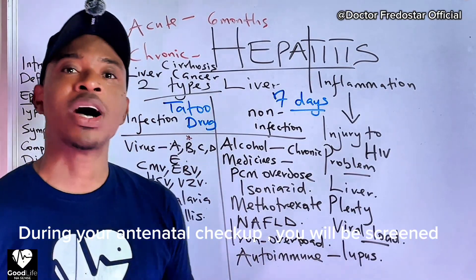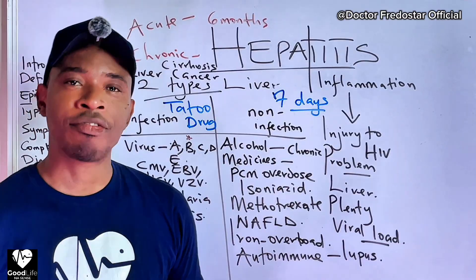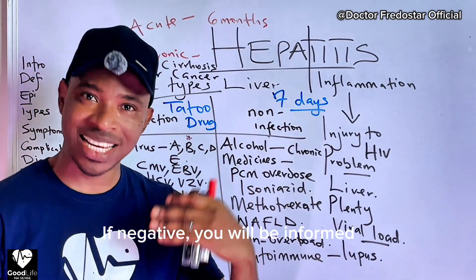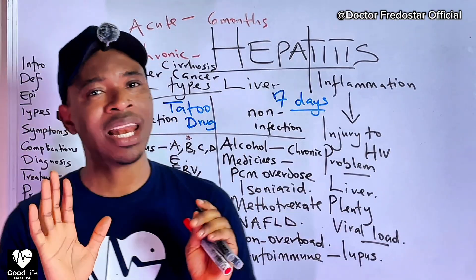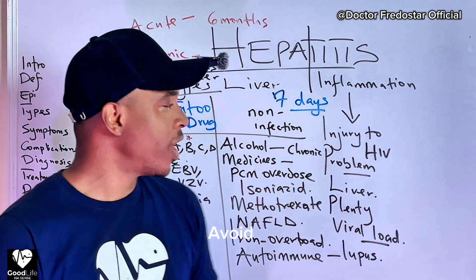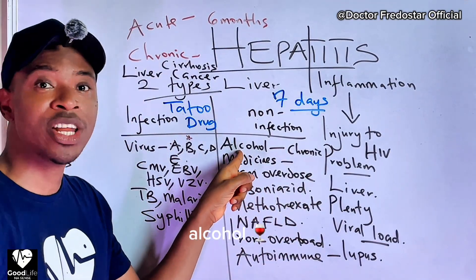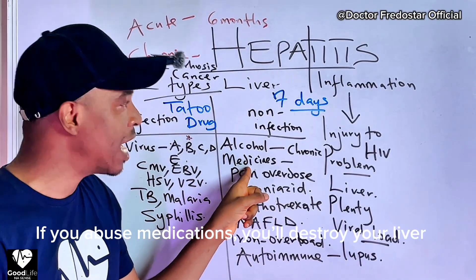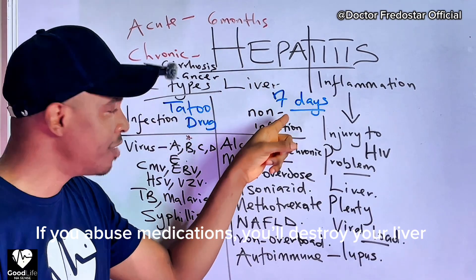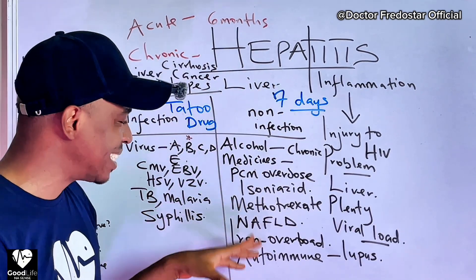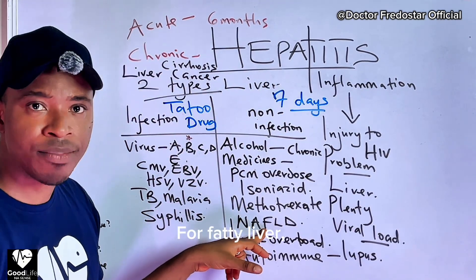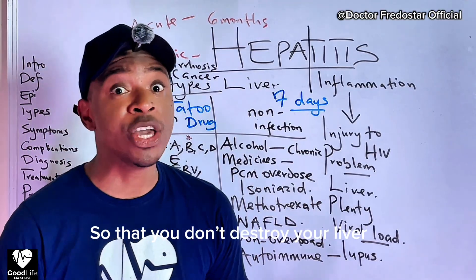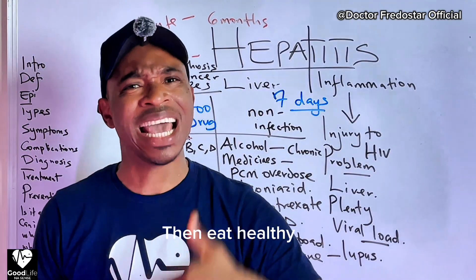If you are pregnant, during antenatal they will test you to find out whether it is in your body. If you have it, they will treat you. Also, avoid alcohol — it will scatter your liver. If you abuse medicines, it will also scatter your liver. Avoid fatty foods and maintain a good lifestyle so you don't damage your liver.